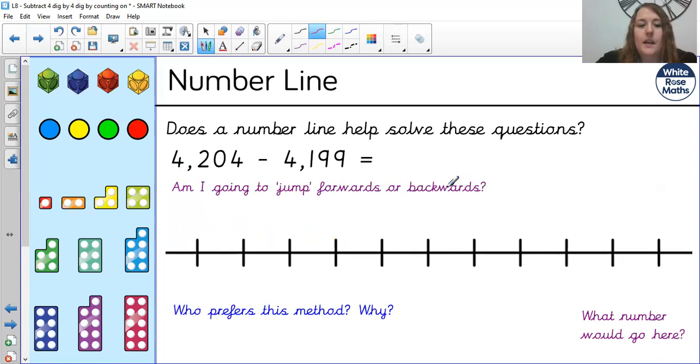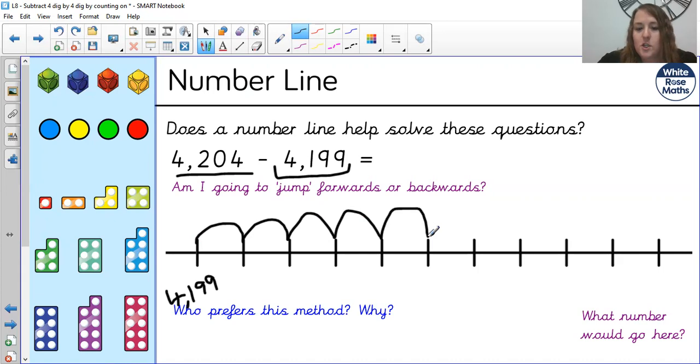Have a go at another one. 4,204, take away 4,199. So again, this is different to all the other ones. We're going to start with our second number, and we're going to put 4,199 at the start. And we're going to carry on. We're going to jump on, count on from our WALT until we get to 4,204. Okay, 4,199, 4,200, 4,201, 4,202, 4,203, 4,204. And there you can see I've made 1, 2, 3, 4, 5 jumps. So the answer is going to be 5.